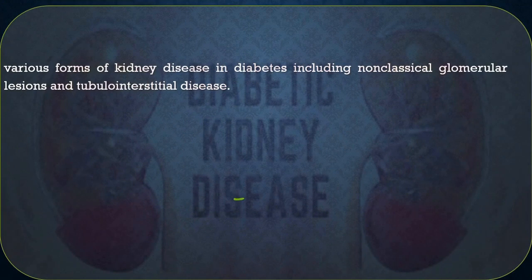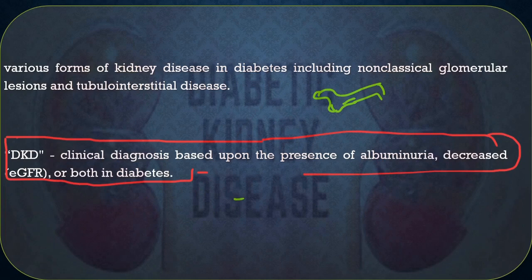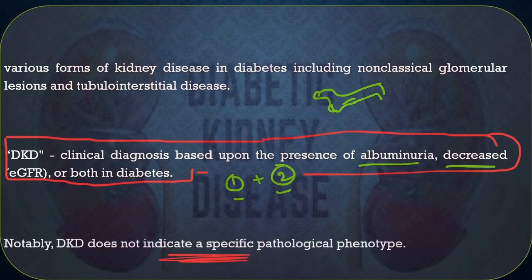Glomerular involvement in diabetes includes glomerular basement membrane thickening, mesangial proliferation, and podocyte injury. However, it was later found that not only the glomeruli, but also the tubule-interstitium and vascular parts are affected in diabetes. So various forms of kidney disease other than diabetic glomerulopathy were described, which is why the term 'diabetic kidney disease' was introduced — defined clinically based on the presence of albuminuria and/or low GFR.